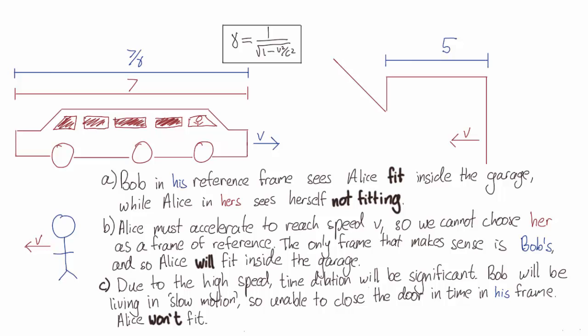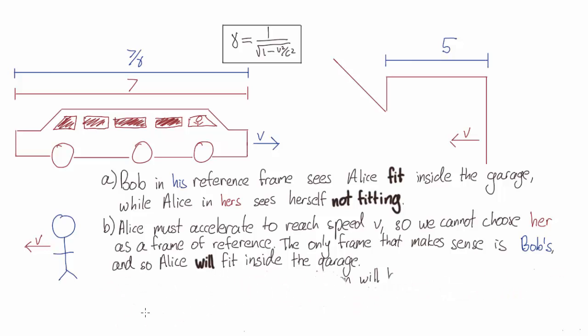who is undergoing time dilation and living in slow motion. That won't affect Bob's ability to close the garage door. So we can discount answer C.